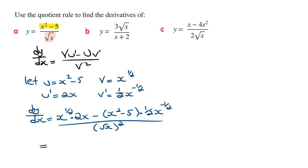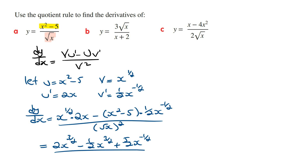Simplifying using the index laws, x to the power of a half times 2x is going to be 2x to the power of 3 on 2. Then expanding the brackets for the second term, this is going to be minus a half times x to the power of minus a half times x squared, which is a half times x to the power of 3 on 2, and then plus 5 on 2 times x to the power of minus a half. The square root of x squared is just going to be x.